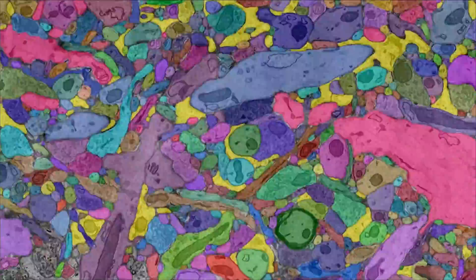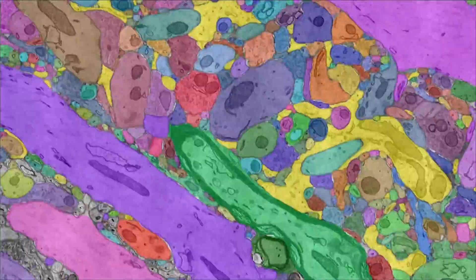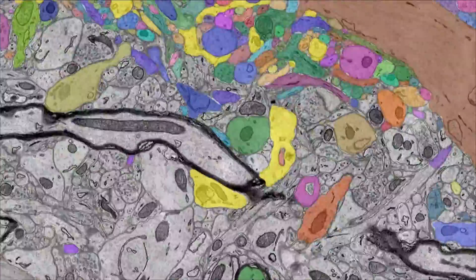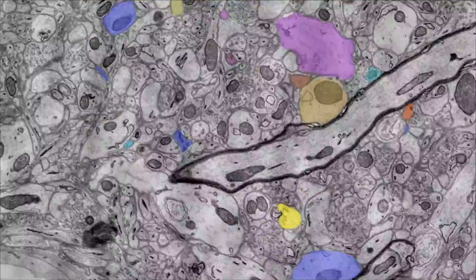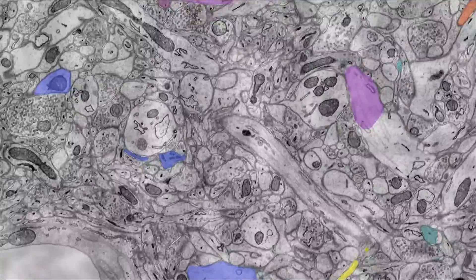For manual segmentation, I wrote a program called VAST, which is essentially a digital coloring book with which we segmented axons, dendrites, synapses and organelles in our volume.